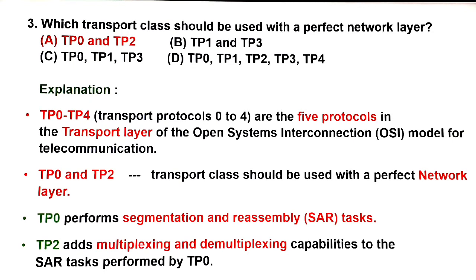Next question: which transport class should be used with a perfect network layer? Answer A: TP0 and TP2. In general, transport protocols 0 to 4 — that is 5 protocols — exist on the transport layer. TP0 performs segmentation and reassembly. TP2 is used for multiplexing and demultiplexing.